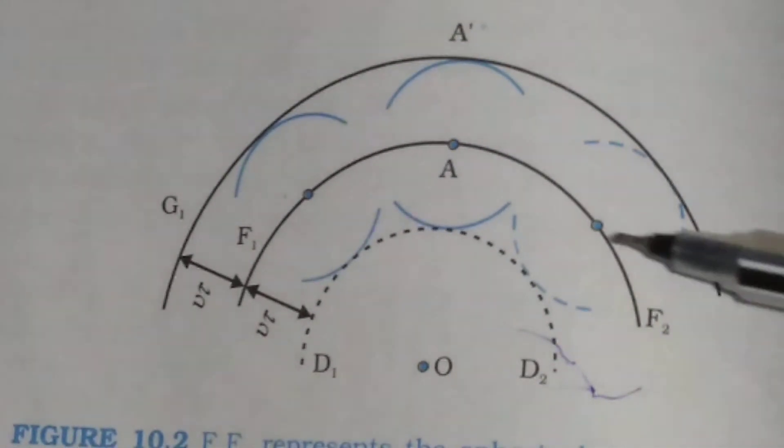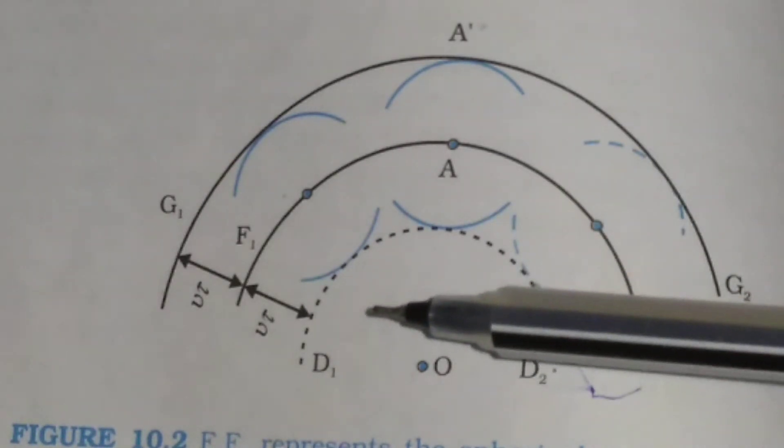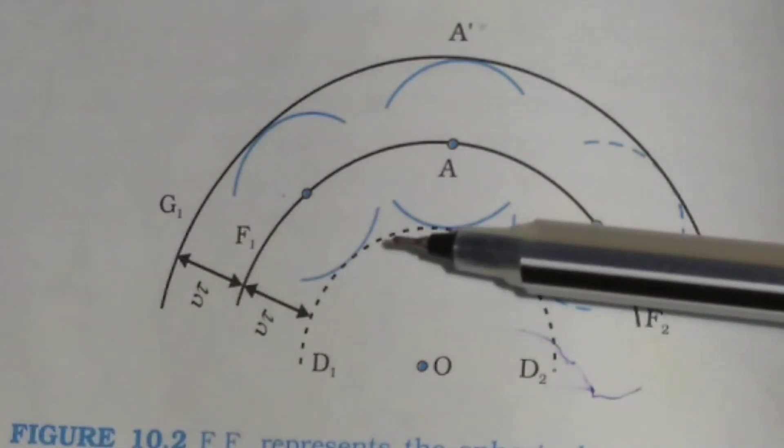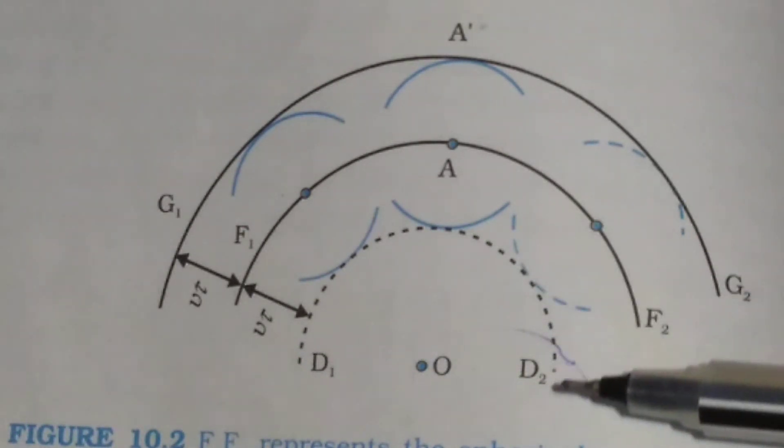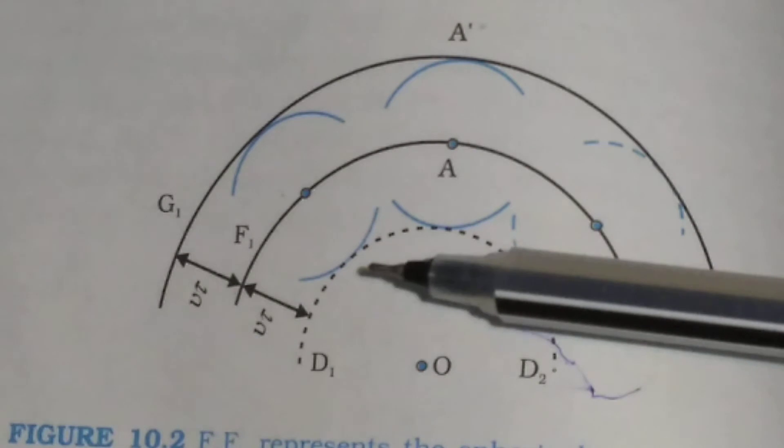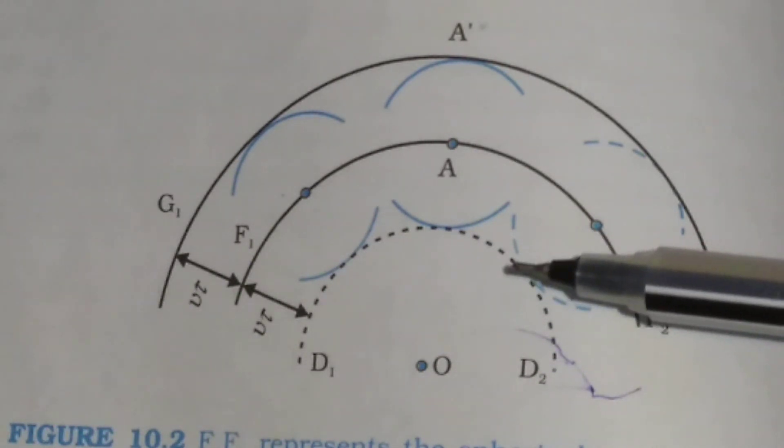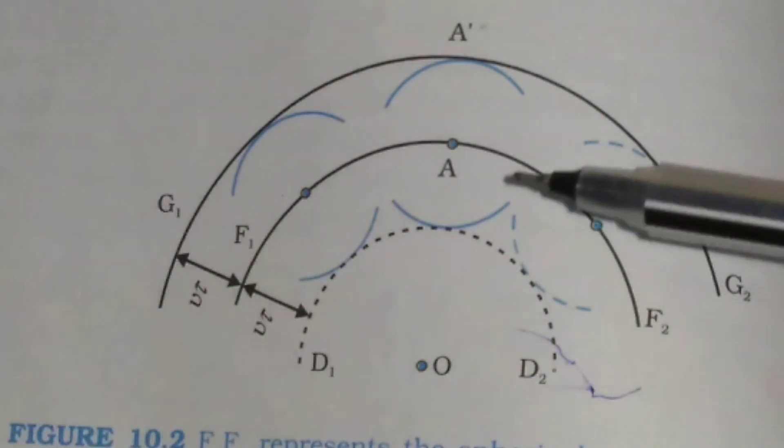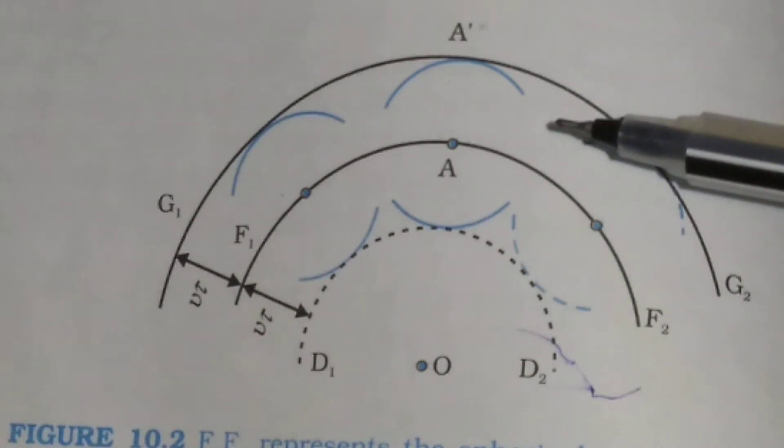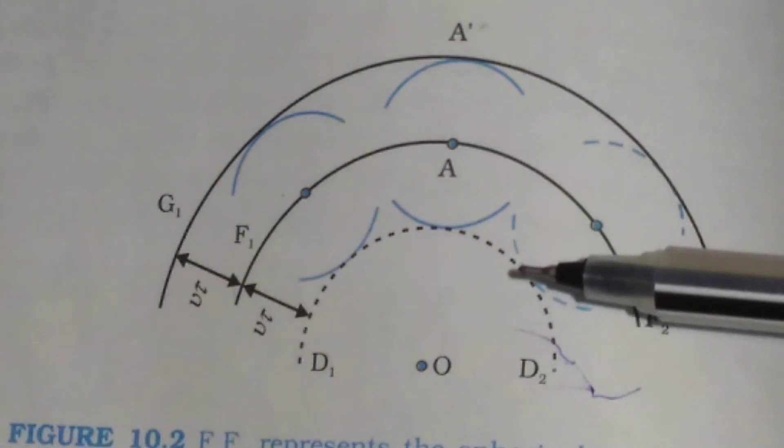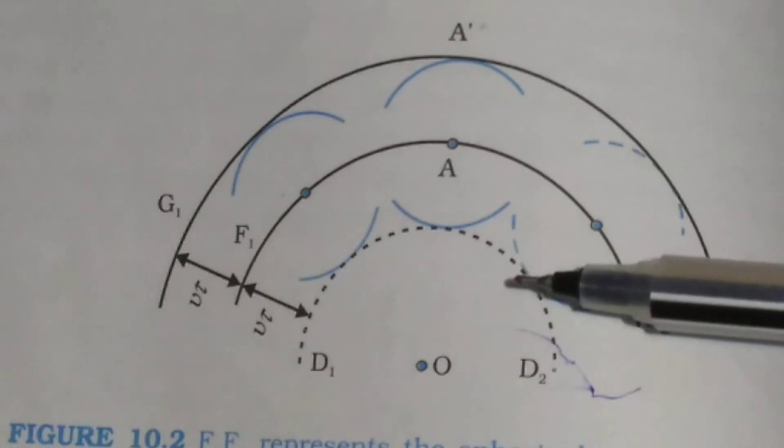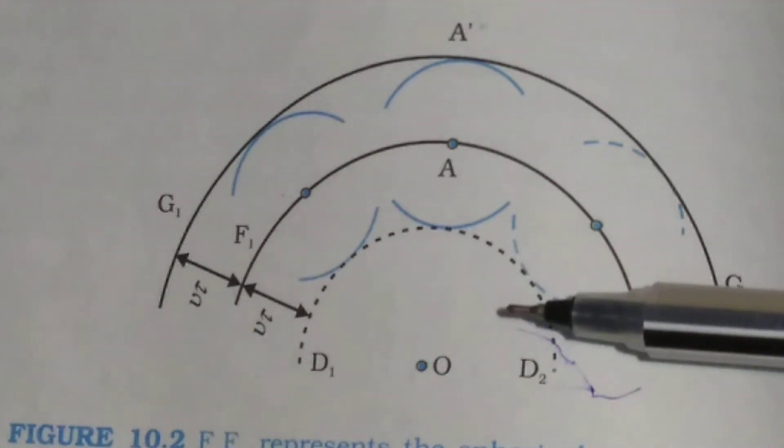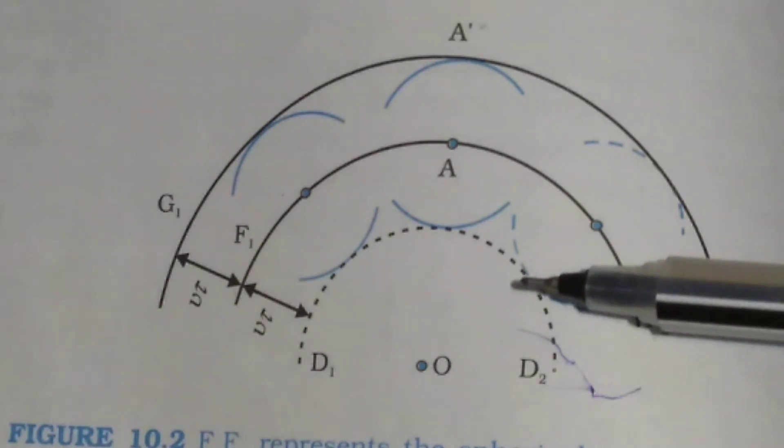And this model has one shortcoming or drawback. You see, you also have a backward wavefront. This wavefront D1, D2, which is called a backward wavefront. And according to Huygens, the amplitude of the secondary wavelet is maximum in the forward direction and zero in the backward direction. That is why there is no back wave D1, D2. But this assumption is not satisfactory.